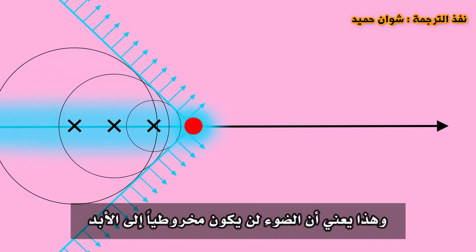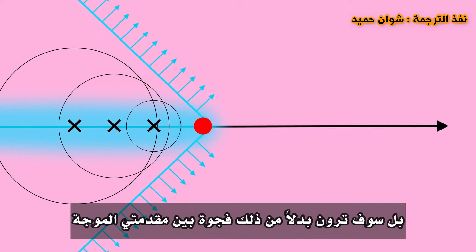And that means that the light will not be a cone forever. Instead, you'll see a gap between the two wave fronts.